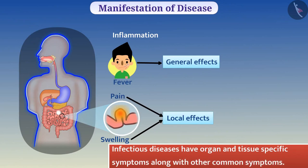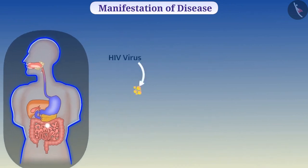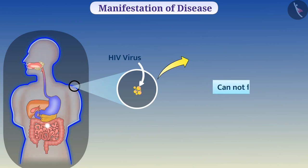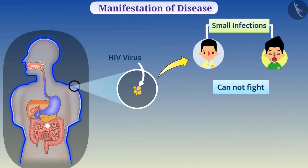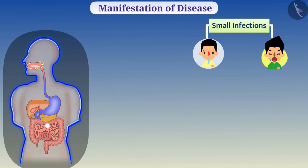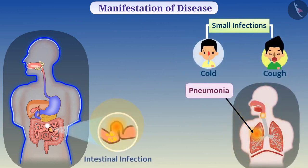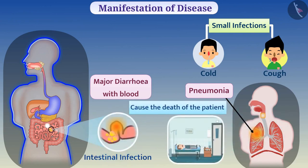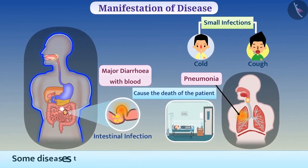HIV virus lives in the cells of the immune system and destroys them. Because of this, we cannot fight small infections. In this situation, common cold and cough can cause pneumonia, and intestinal infection can cause major diarrhea with blood. These other infections can cause the death of the patient. In some diseases, this tissue specificity of infection shows very general effects.